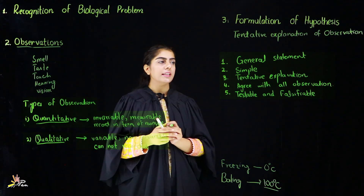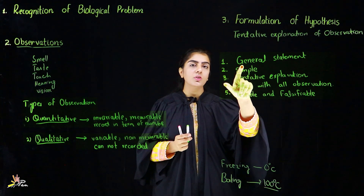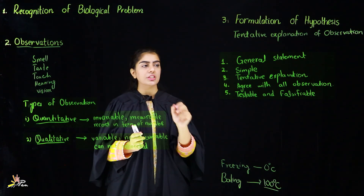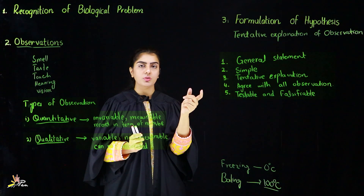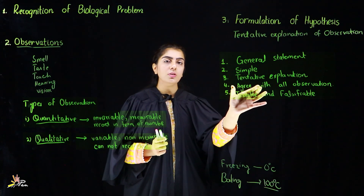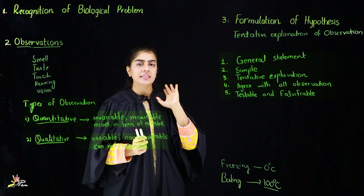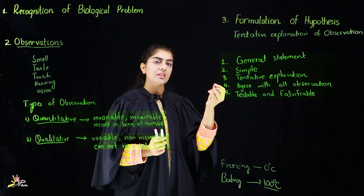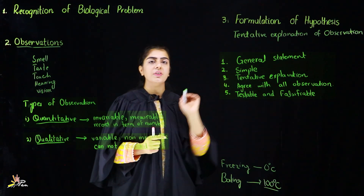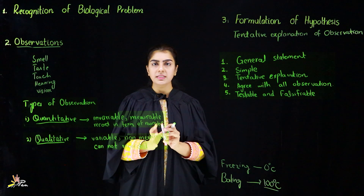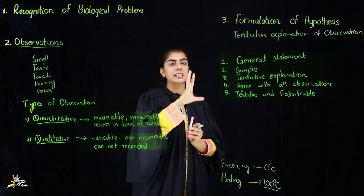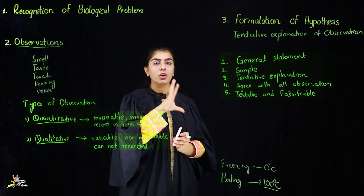Your hypothesis should be testable, it should be a simple statement, and it should be a tentative explanation — meaning it can be correct or it can be wrong since it is unconfirmed. It should agree with all possible observations — whatever observations are possible, the hypothesis should be in agreement with all of them. And it should be testable and falsifiable — you should be able to test it and also be able to prove it wrong.